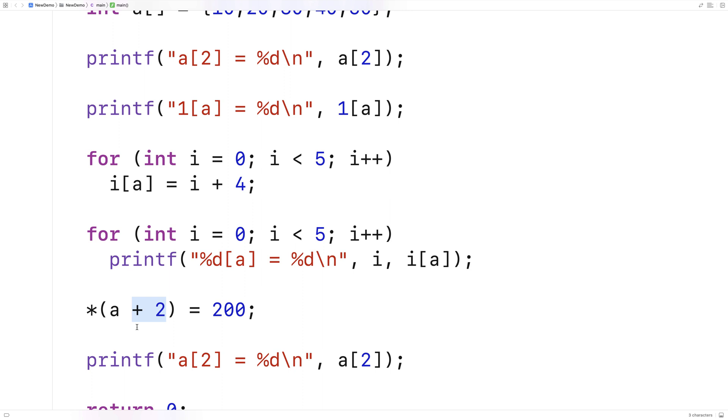And this star here dereferences this memory address and it goes and gives us access to it, and we set it equal to 200 at that point.